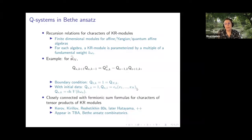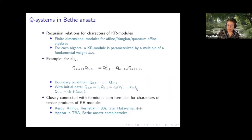For each algebra, all you have to know is that a KR module is parameterized by two numbers: which fundamental weight, and a multiple of it. So it's parameterized by a highest weight which is a multiple of a fundamental weight. For SL_N, these are just Schur functions for rectangular representations, and they satisfy this bilinear recursion relation.